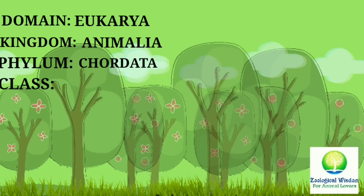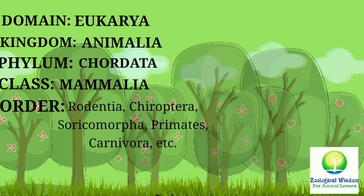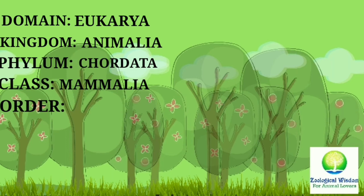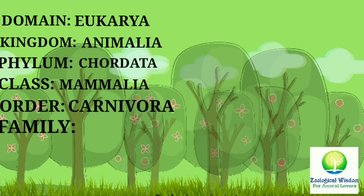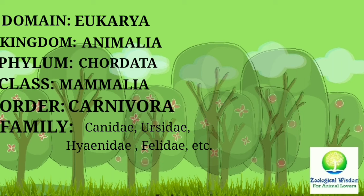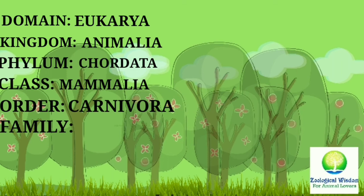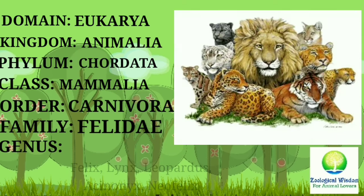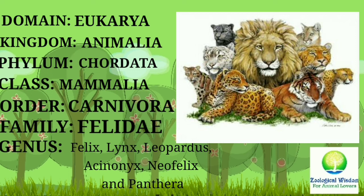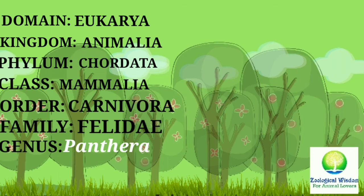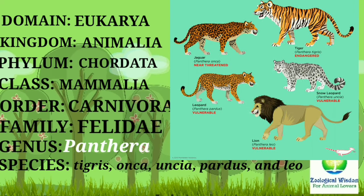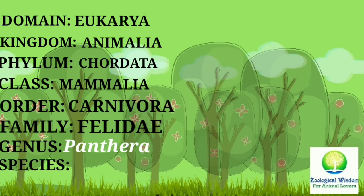Considering class Mammalia, it is divided into orders like Rodentia, Chiroptera, Soricomorpha, Primates, Carnivora, etc. Taking order Carnivora, it consists of families like Canidae (dogs), Ursidae (bears), Hyaenidae (hyenas), Felidae (cats), etc. Under family Felidae there are 14 genera, of which some are Felis, Lynx, Leopardus, Acinonyx, Neofelis, and Panthera. In genus Panthera there are 5 species: Tigris, Onca, Uncia, Pardus, and Leo.